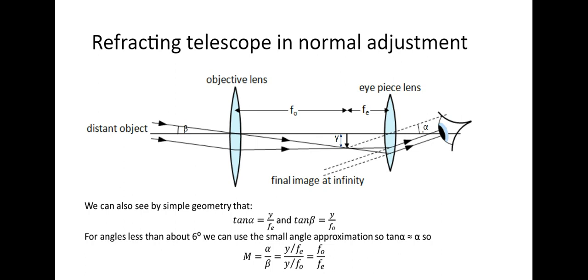M = fo/fe is a much more useful equation because the angles are quite difficult to measure, but the focal lengths are very easy to measure. When you've made or bought the lenses you know what focal length they are, and when you buy a telescope it will tell you. So M = fo/fe is given in the data booklet. In summary, a refracting telescope takes light in from the objective lens, focuses it at a point, and then the eyepiece lens takes the light and sends it to your eye.